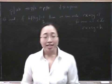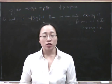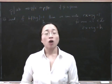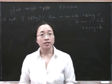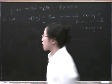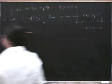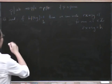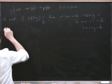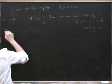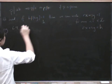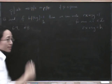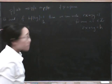Let's do one example of using Euclid's algorithm backwards on a case where the highest common factor is not 1. So let's try 69 and 48.